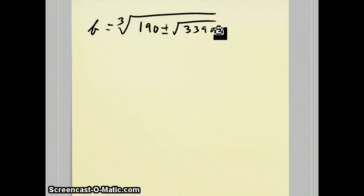And if you pick one of those values, like the plus or the minus, the other value ends up, if you pick 190 plus, then the a value is 190 minus.